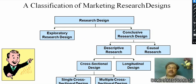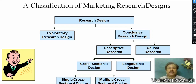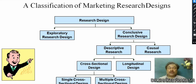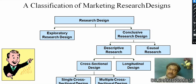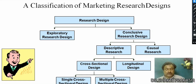Research design can be divided into two parts: exploratory research and conclusive research design. Conclusive research design is again divided into descriptive research and causal research. Descriptive research is further divided into cross-sectional design and longitudinal design, and cross-sectional design is divided into single cross-sectional design and multiple cross-sectional design.